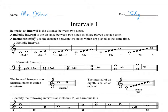A melodic interval is the distance between two notes which are played one at a time. Sometimes in band we play a melodic interval. So whenever we play a melody, for example, Star Wars — that's a fifth. Because the notes are five notes apart and it has a certain sound to it. The distance between the notes here to here, we call that melodic.